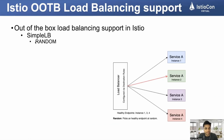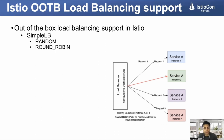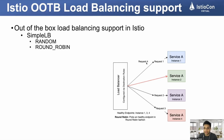Let's discuss random and round robin, which can be configured using simple LB in Istio. For a given service with multiple instances, if only instances one, three, and four are healthy, configuring random would pick a healthy endpoint at random and send traffic to it. If I configure round robin, traffic would go to healthy endpoints in a round robin fashion — request one goes to instance one, the next to instance three, then to instance four, and then back to instance one.